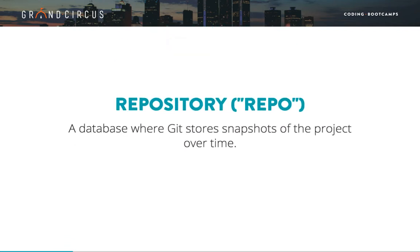The first term is Repository, or Repo for short. A repository is a database where Git stores snapshots of all the files in a project as they change over time. If you have multiple projects, each will need its own Git repository.